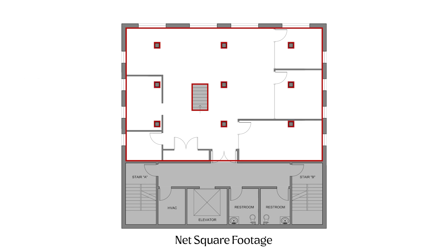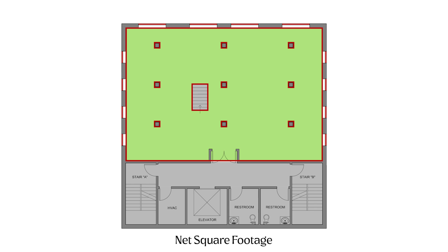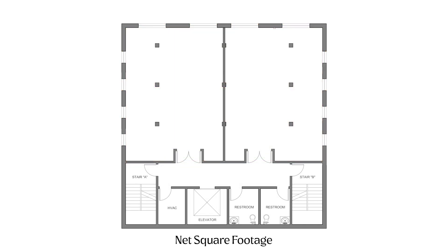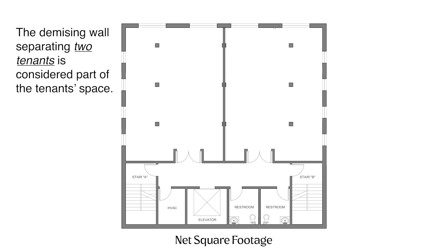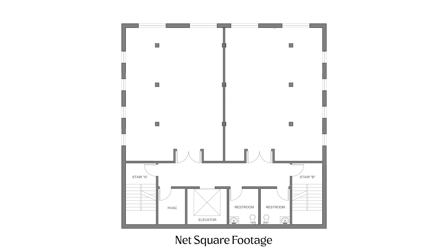Columns are also not usable space, so all column square footage would be subtracted. However, interior non-structural walls are included in the tenant's net square footage, because technically those walls could be demolished if the tenant wanted one big open space. Finally, if there are multiple tenants on a single floor, the demising wall between two tenants is considered a shared part of each of their usable spaces, so you would measure a tenant's net usable space from the center line of those demising walls.